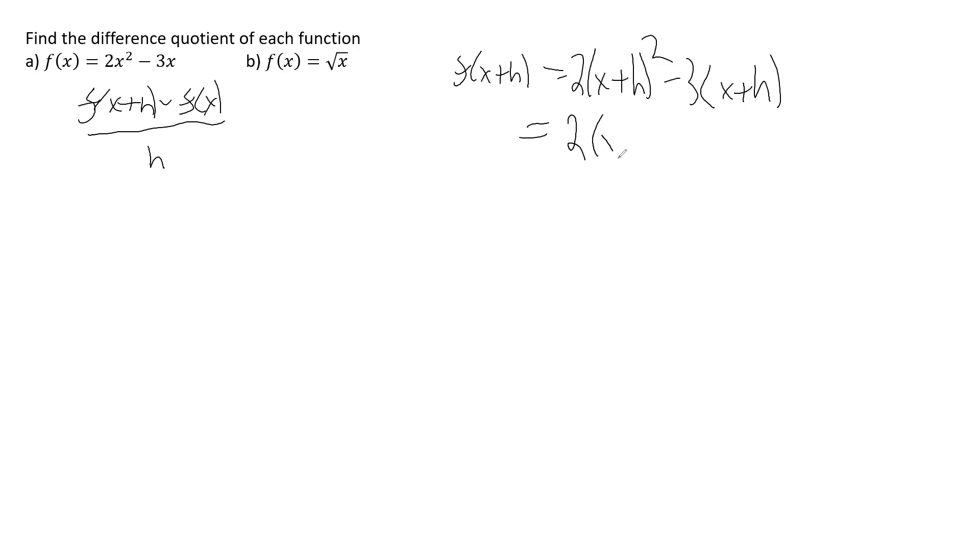So when you foil that, you would get x squared plus 2xh plus h squared. Then minus 3x minus 3h. Distribute your 2, so 2x squared plus 4xh plus 2h squared minus 3x minus 3h.